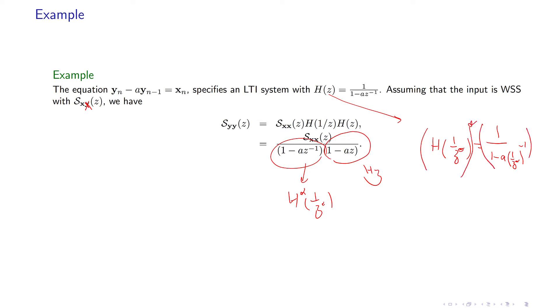So H conjugate, 1 over z conjugate, is going to be equal to, so this one becomes 1 minus a, and then this will become z conjugate, all over that.